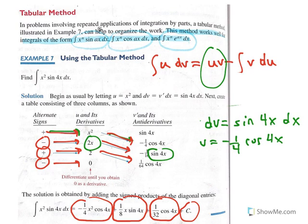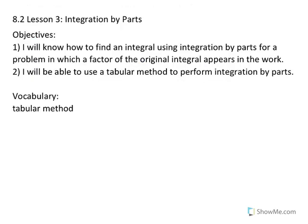The tabular method gives the same result as applying integration by parts repeatedly by hand, but organizes the work in a table. It is most useful when you have to do repeated applications of integration by parts three or four times. Today we looked at two objectives: finding an integral using integration by parts when the original integral reappears in the work, and applying the tabular method to perform integration by parts.